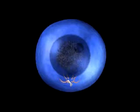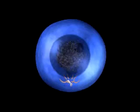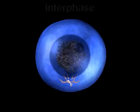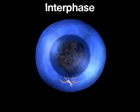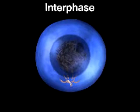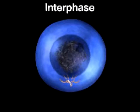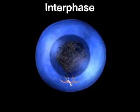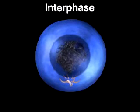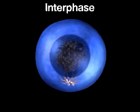Follow the diagram showing the process of meiosis. During interphase, the cell replicates its chromosomes. Each chromosome then consists of two identical sister chromatids, held together by a centromere.